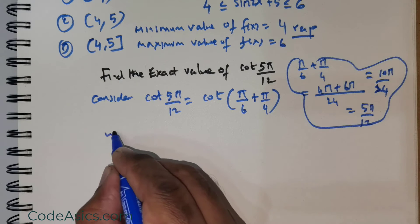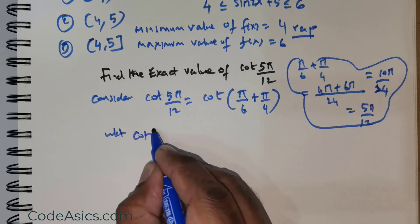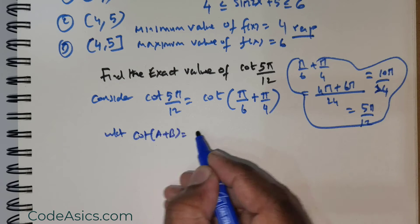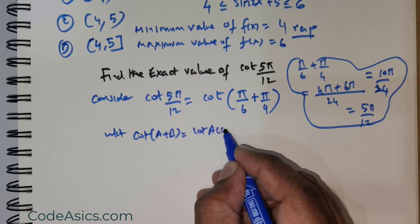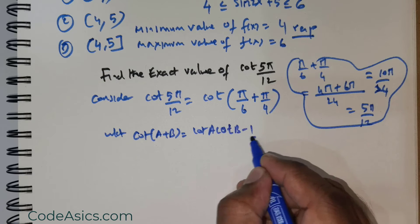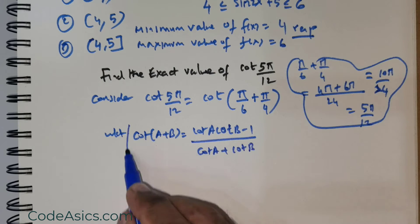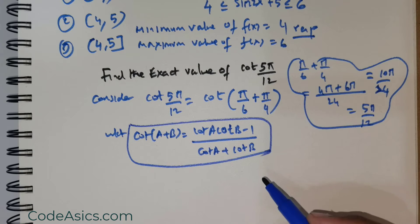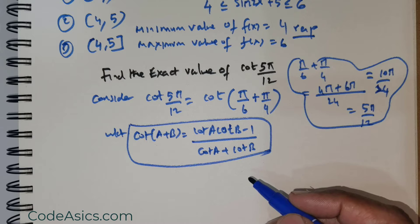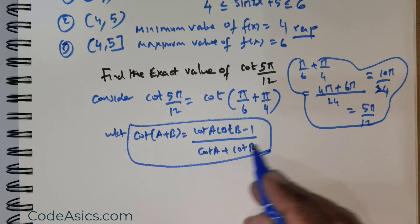Now I would like to apply this popular formula: cot(A + B) = (cot A × cot B - 1)/(cot A + cot B). This is a popular formula which you should have in your arsenal when it comes to solving questions, because many times this identity would come in handy.